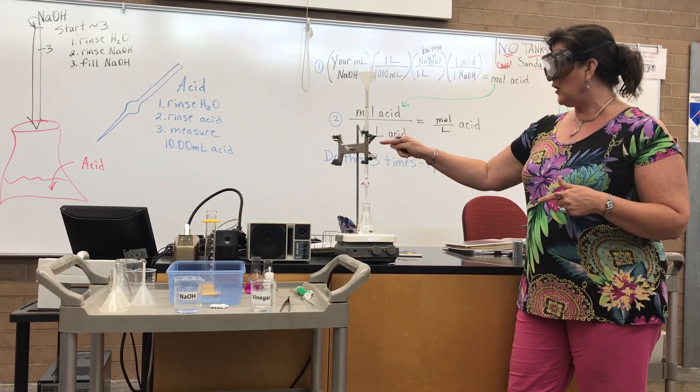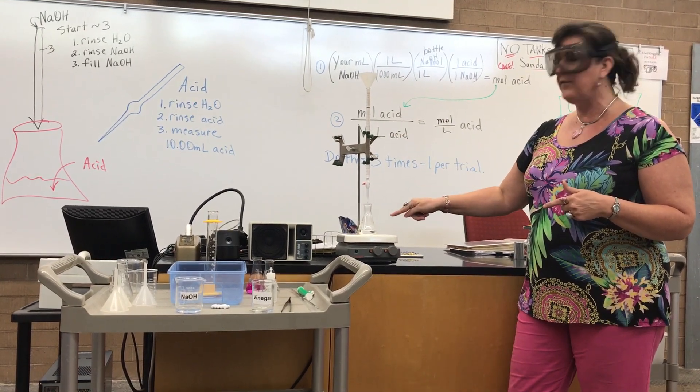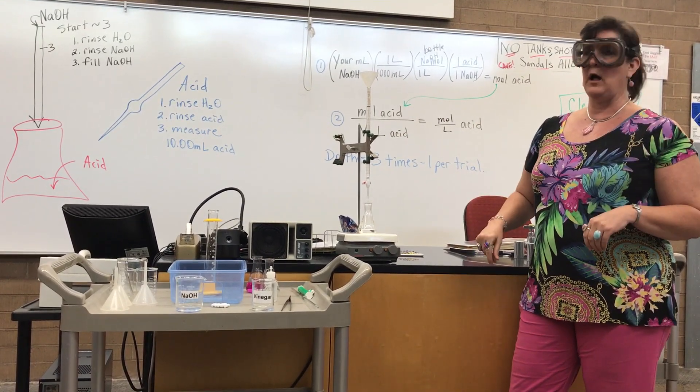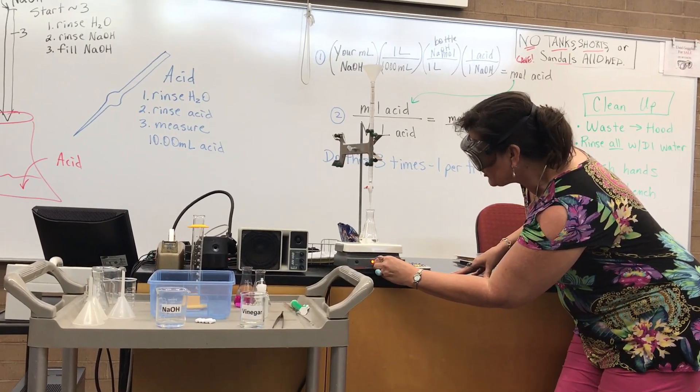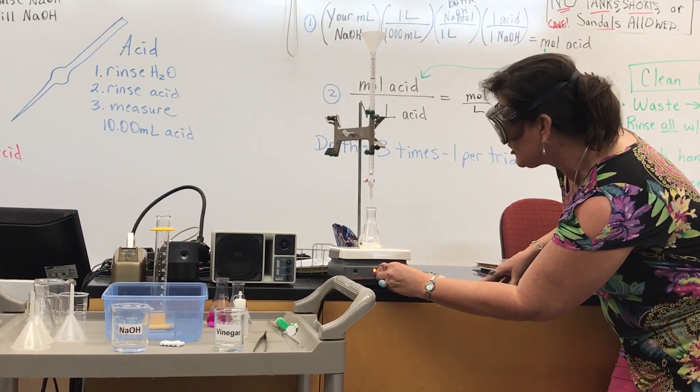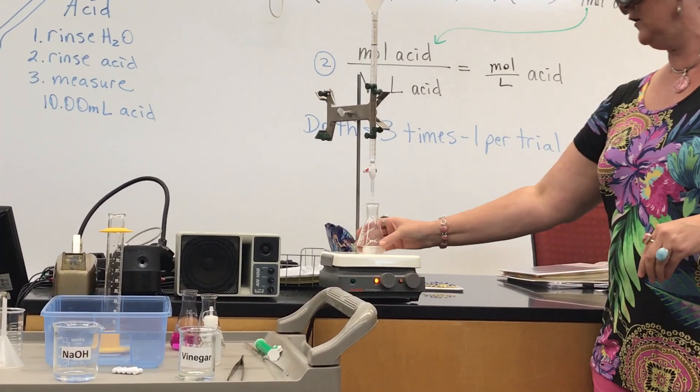So we're going to add the sodium hydroxide into the flask and stop it when it's pale, pale, pale pink. Now, so we need to get it stirring. We want it to stir briskly, but not splash, so around four or five.